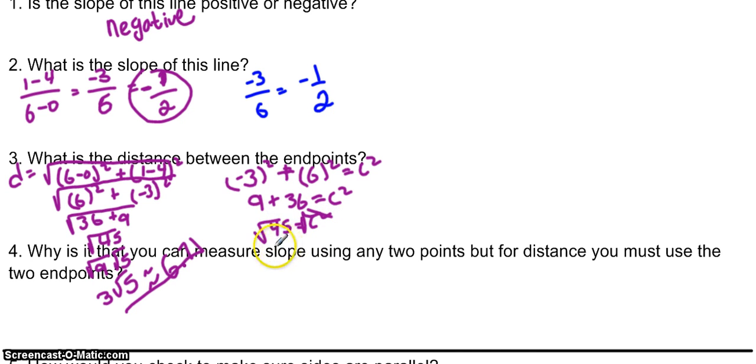And we get the square root of 45, which simplifies, as we know, to 3 square root 5 or to 6.71.